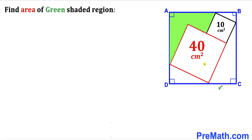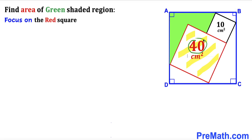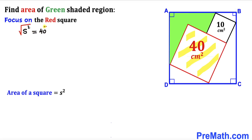Keep in mind that all of these shapes are squares. Let's focus on this red square whose area is 40. Recalling the area of a square formula: Area = s². So s² = 40, and taking the square root of both sides, s = √40 = 2√10. Therefore all side lengths of this red square are 2√10.